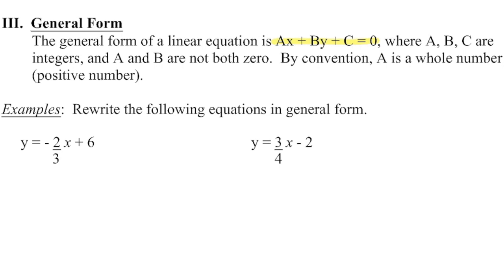There are three ways that we can write a linear equation. The first one is slope intercept form. The second one is what we call general form.